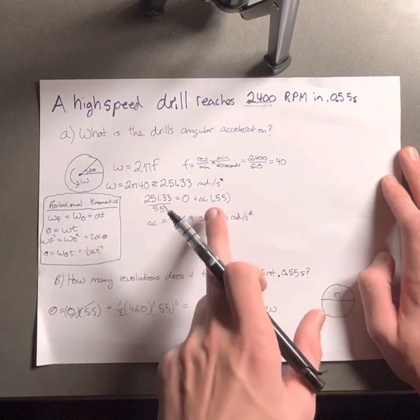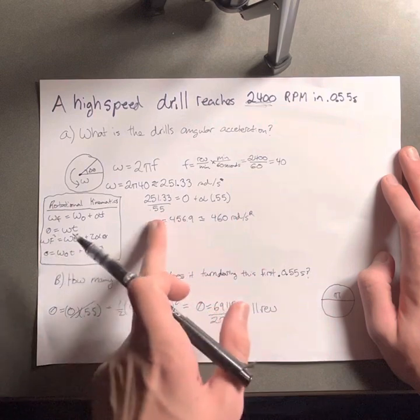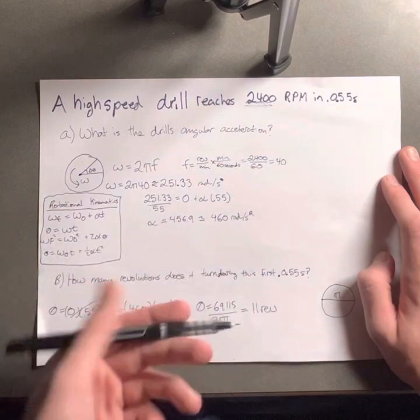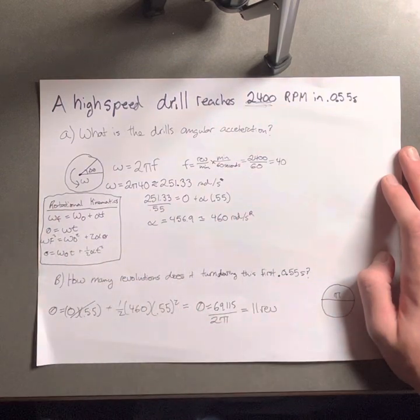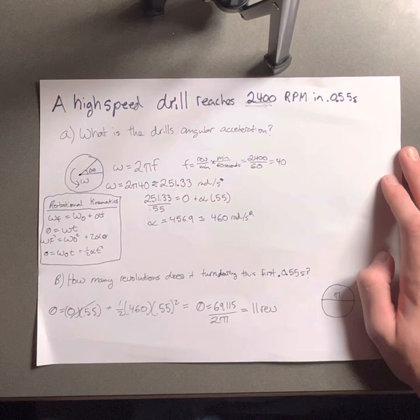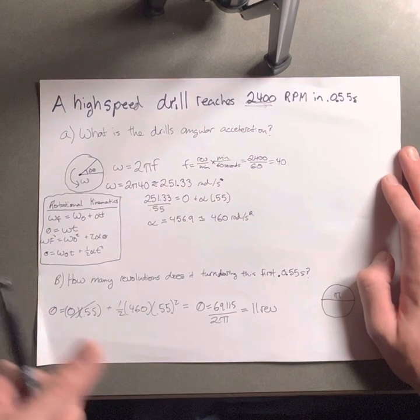So we can just divide the velocity by the time to get our angular acceleration, and we end up getting 460 radians per second squared as our angular acceleration.